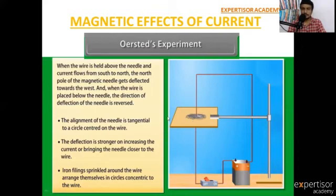That is the observation of Oersted's experiment. The inner meaning is: when iron material or any metal is brought near to the current-carrying wire, after some time it gets magnetic properties. That is the conclusion of Oersted's experiment.